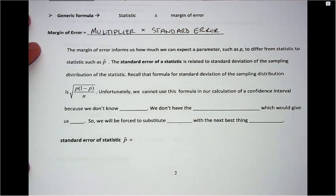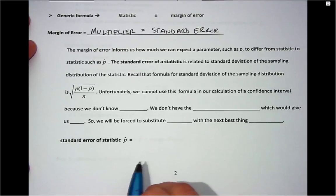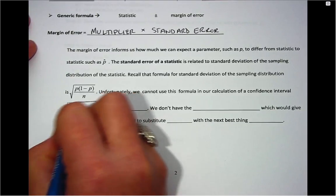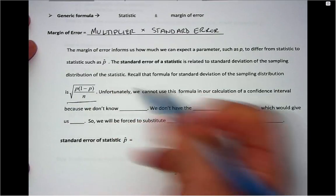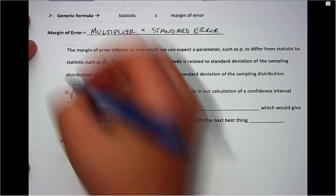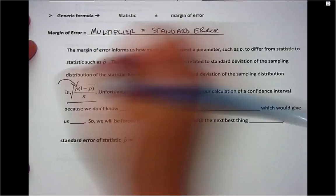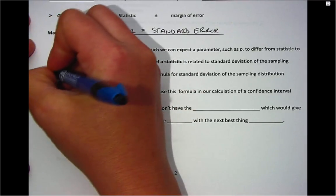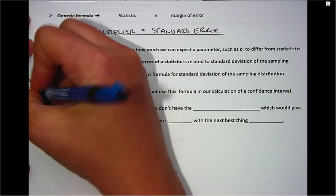Now, standard error is a measurement that's new to us. We talked about in sampling distributions how there's variability amongst the values of p-hat, and we talked about a way to measure that variability would be through standard deviation, whose formula is shown right here. However, the problem is that this particular formula uses p, which, if you recall, is the notation or the value for the population proportion.